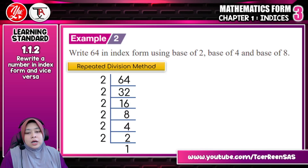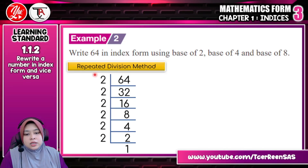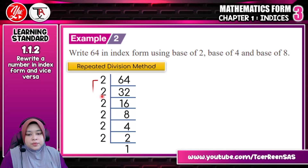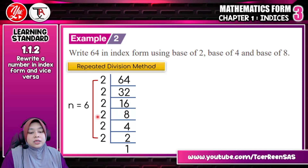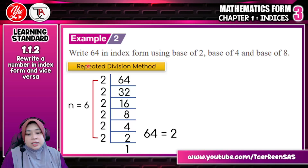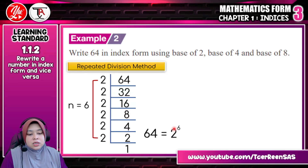Count how many times 2 repeats: 1, 2, 3, 4, 5, 6 — there are 6 twos. So 64 equals 2 to the power of 6. That means when written using base 2, the power is 6 because 2 is divided 6 times. For base 4, the same method — divide 64 by 4: 64 ÷ 4 = 16, 16 ÷ 4 = 4, and so on until you get 1. Count the repetitions: N equals 3. So the answer is 64 equals 4 to the power of 3. For base 8: 64 ÷ 8 = 8, 8 ÷ 8 = 1 — only 2 times, so 64 equals 8 to the power of 2.